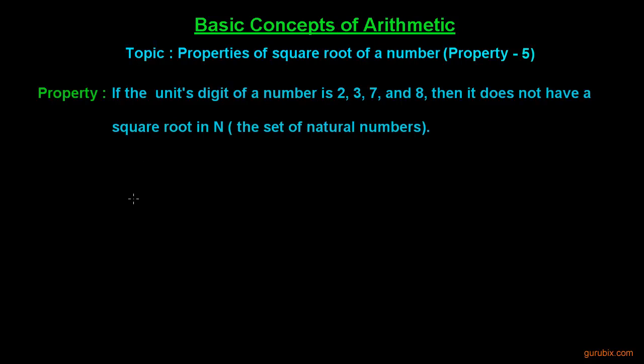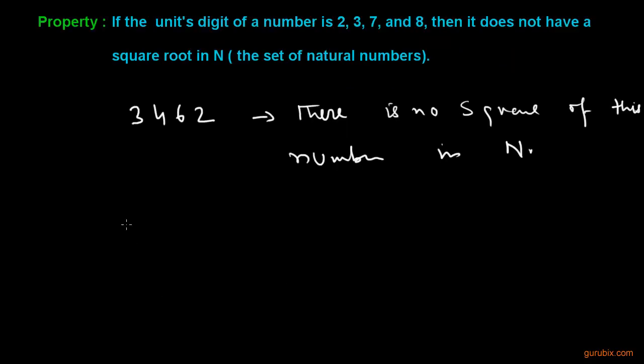Suppose we have a number 3,462. This number does not have a square root in N, which means the set of natural numbers. Same as if we have numbers like 233, 578, and 6207.